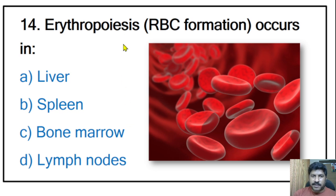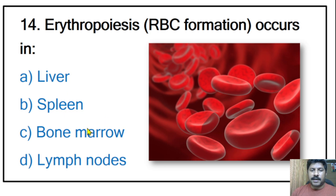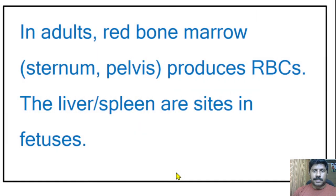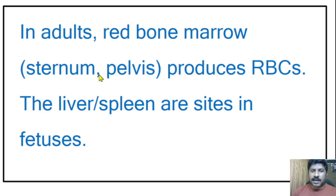Fourteenth question: erythropoiesis — that is RBC formation — occurs in the liver, spleen, bone marrow, or lymph nodes? The correct answer is bone marrow. The production of RBCs occurs in bone marrow, and maturation occurs in different places such as the thymus gland and lymph nodes. In adults, red bone marrow from the sternum and pelvis produces RBCs. In fetuses, the liver and spleen are the main sites of RBC production.